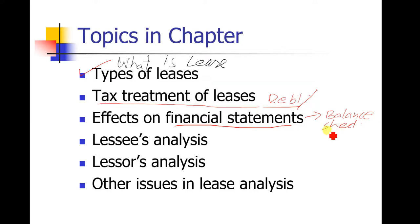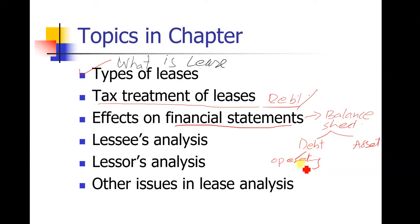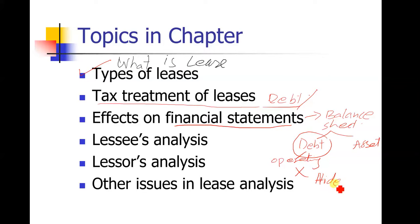In the balance sheet we have to show our debt and assets, but if we are using an operating lease, although it is like a debt, we don't have to show it in our debts on the balance sheet. In this way, businesses can actually hide their debt and show their financial position better to outside investors.